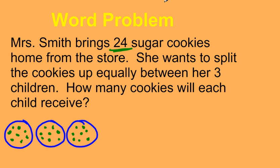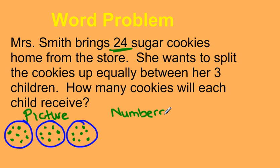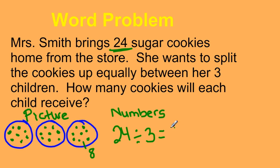If I were to write this in numbers — so this is the picture — I have 24 sugar cookies and I was dividing it by 3 children. And my answer was 1, 2, 3, 4, 5, 6, 7, 8. So they each get 8 cookies.